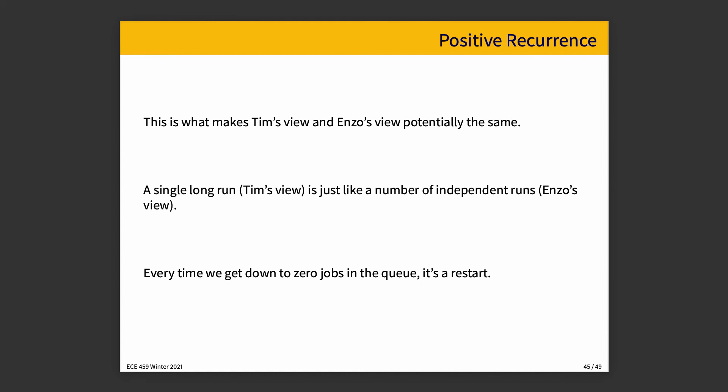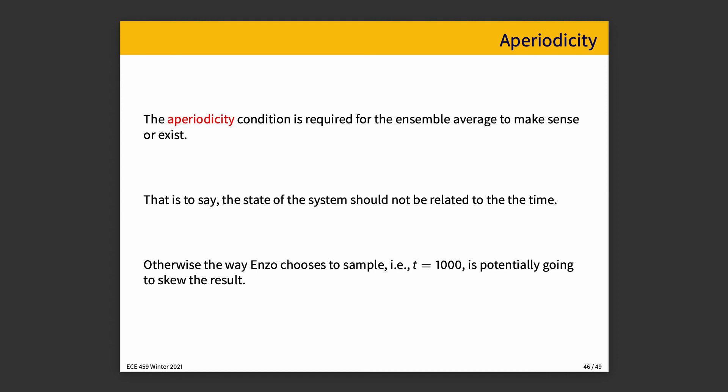This is kind of what makes Tim and Enzo's view potentially the same — the idea of positive recurrence. A single long run is just like a number of independent runs. If you have the Tim view, you just cut it up every time you have a restart where the queue gets down to zero, and then it's as if it's Enzo's view. And if you have Enzo's view, you just tape them together, and it works.